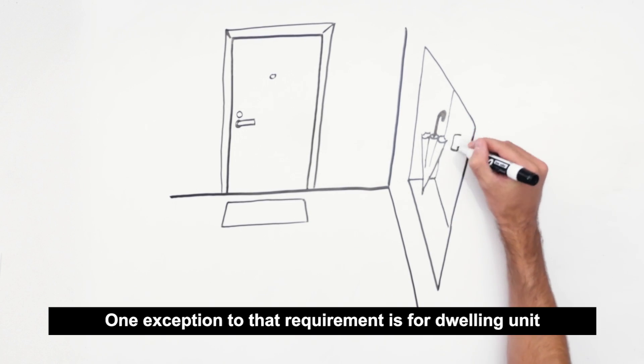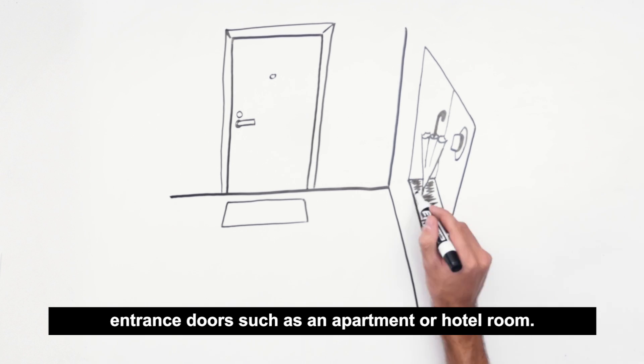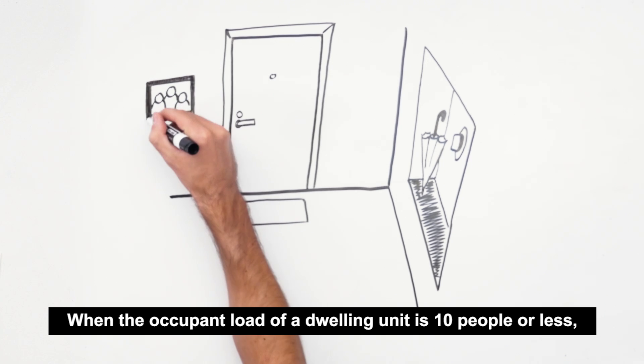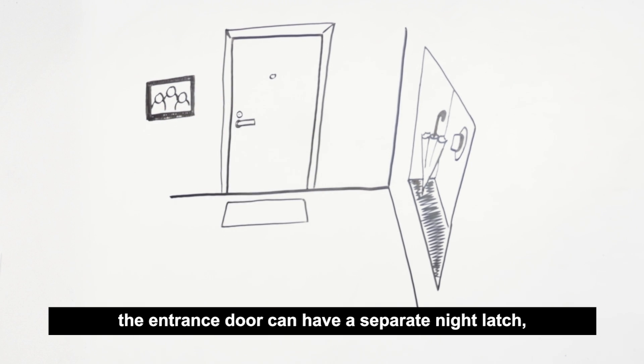One exception to that requirement is for dwelling unit entrance doors, such as an apartment or hotel room. When the occupant load of a dwelling unit is 10 people or less, the entrance door can have a separate night latch, deadbolt, or security chain which requires a second operation, as long as a key or tool is not required for egress.